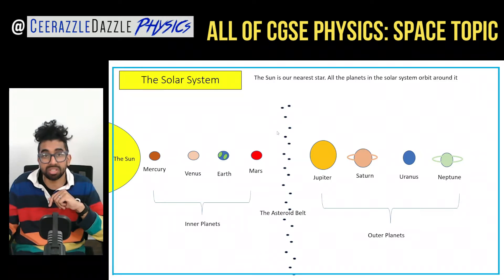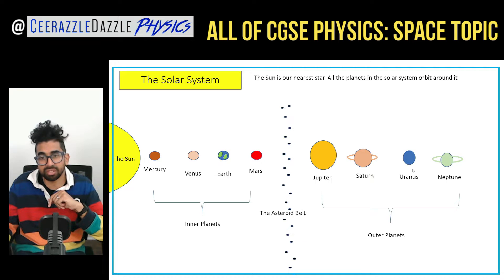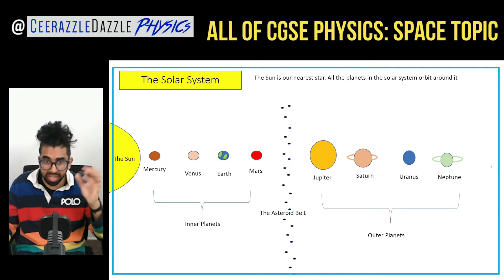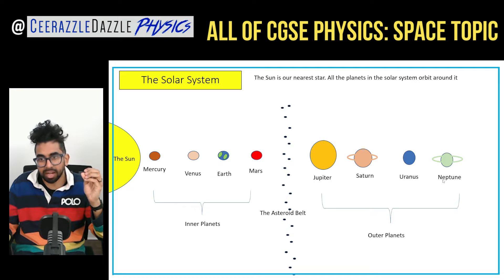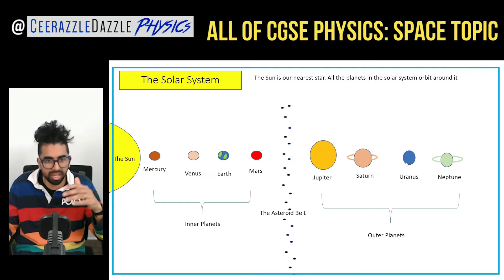The Sun is our nearest star and all the planets in the solar system orbit around it. We've got Mercury, Venus, Earth and Mars, Jupiter, Saturn, Uranus, Neptune. There used to be a planet called Pluto but it got demoted. To memorize the order: 'My very easy method just sums up nine planets' — but obviously Pluto is no longer a planet so you can just remove that.